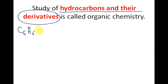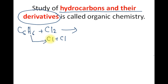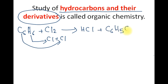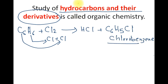For example, we have C6H6, which is benzene. Now if benzene reacts with chlorine, one hydrogen is removed and chlorine takes its place, forming HCl as a byproduct. The remaining compound is C6H5Cl, which is called chlorobenzene. So chlorobenzene is called a derivative of the hydrocarbon benzene, and it is still an organic compound.